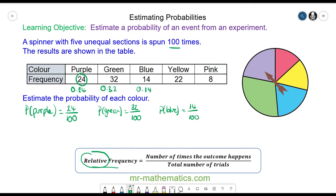The probability of a yellow: 22 out of 100, which is 0.22. And the pink is 8 out of 100, 0.08.